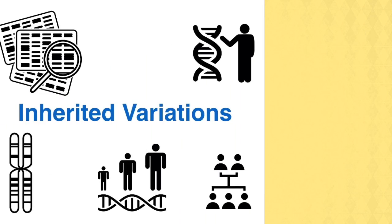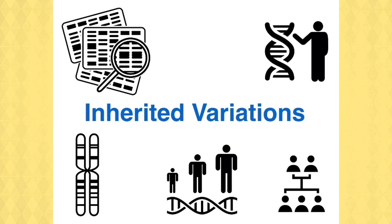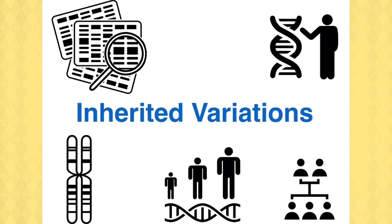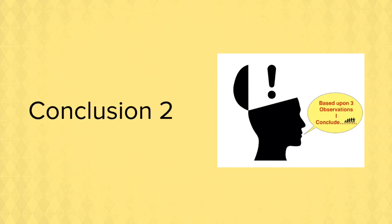Observation number three: when you look at populations of organisms, although very similar, there are differences and these differences must be down to genetic variation. Leading to conclusion number two.